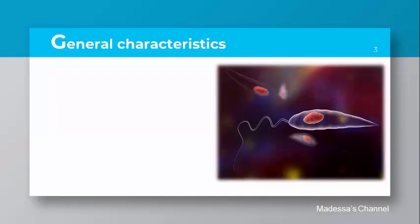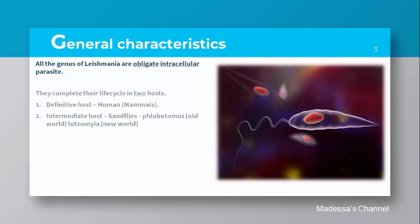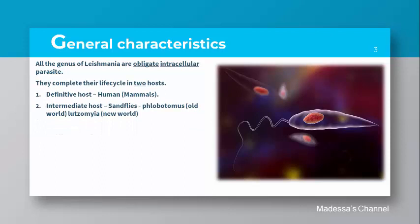All genera of Leishmania are obligate intracellular parasites — they live inside the host cell, specifically inside macrophages, and need a host cell to survive. They complete their life cycle in two hosts. The definitive hosts are humans or any mammals. The intermediate hosts are the sand flies — genus Phlebotomus in the old world and Lutzomyia in the new world.